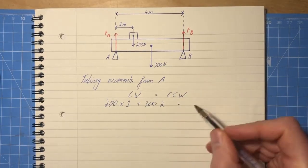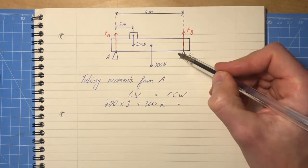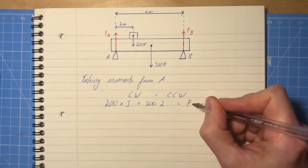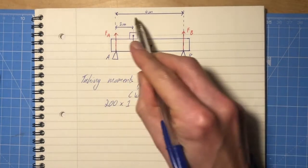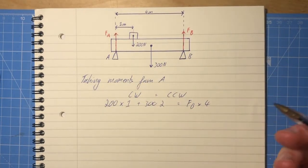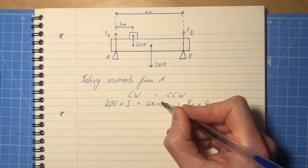equals the anti-clockwise one. So the anti-clockwise moment here is simply FB, we don't know what it is, FB times 4 meters. And now we can just go ahead and solve this one.